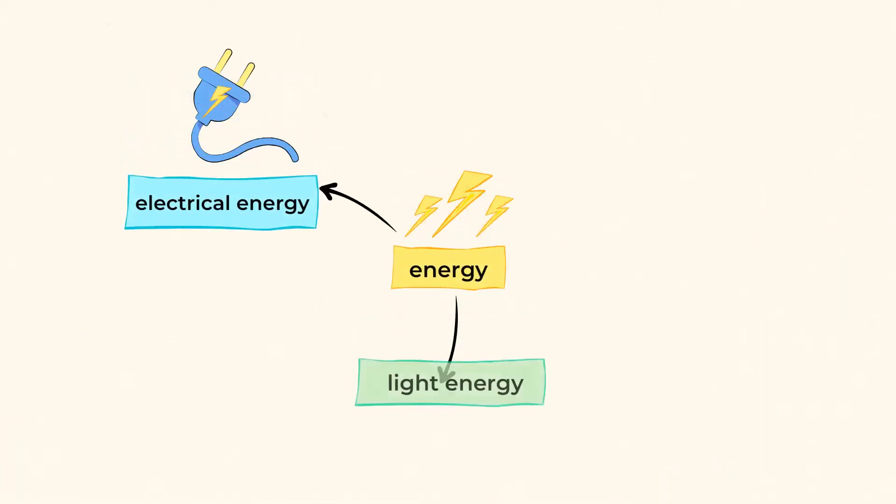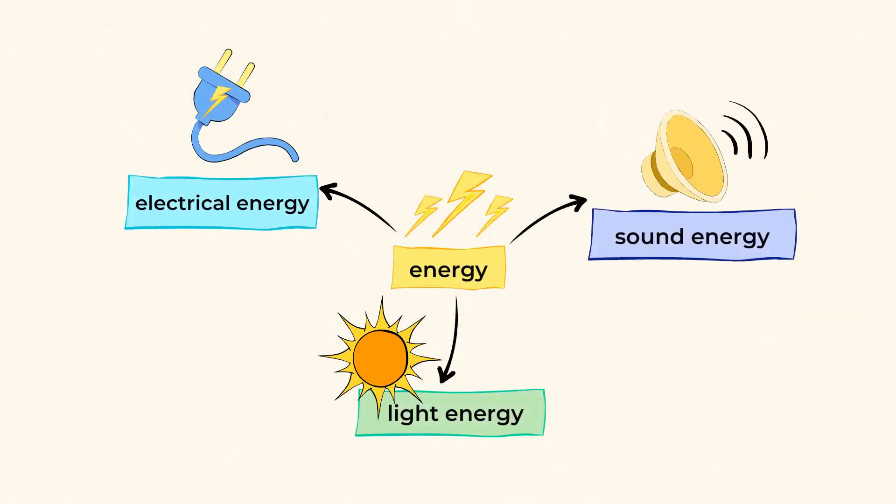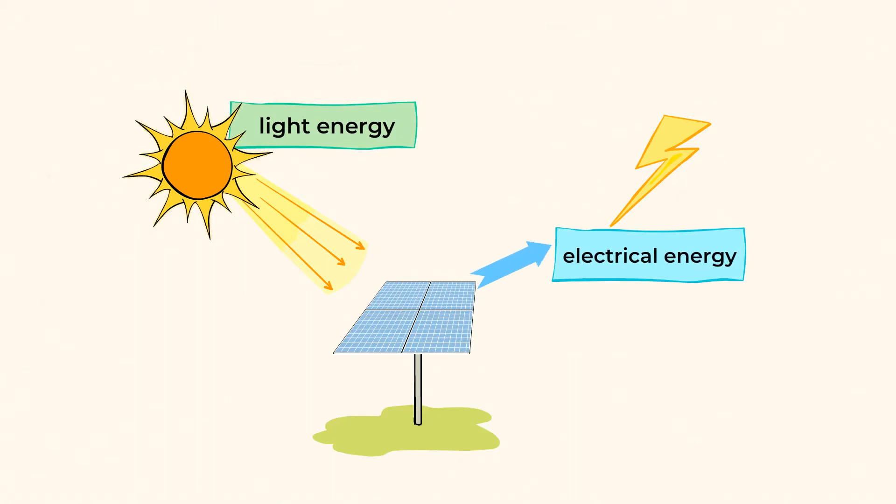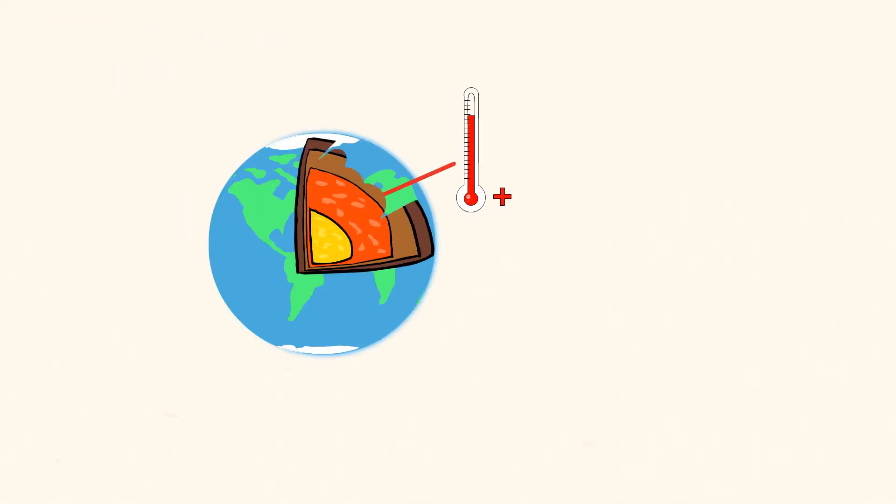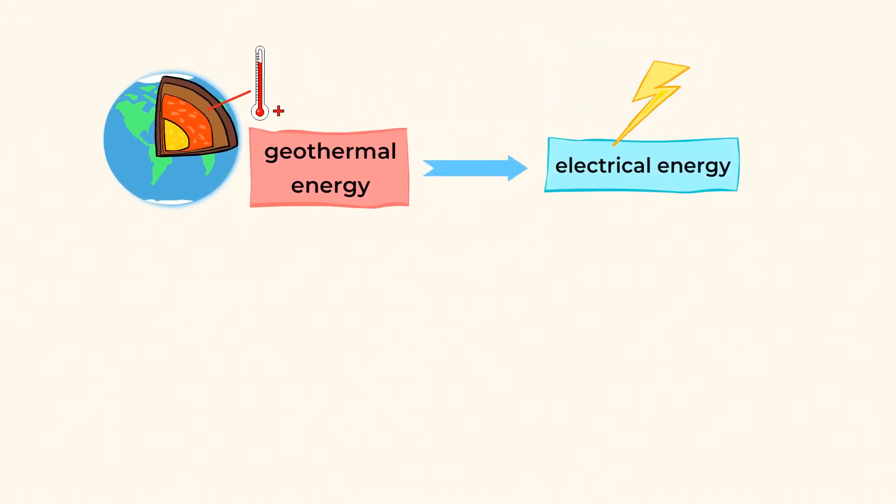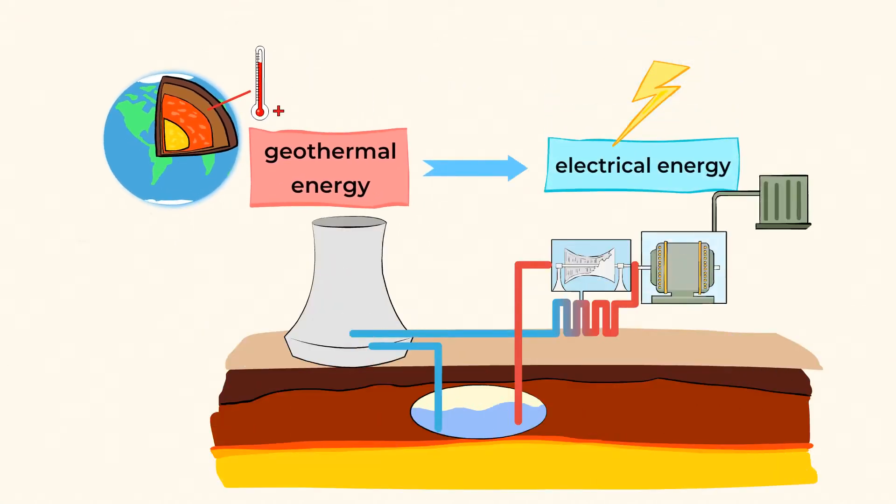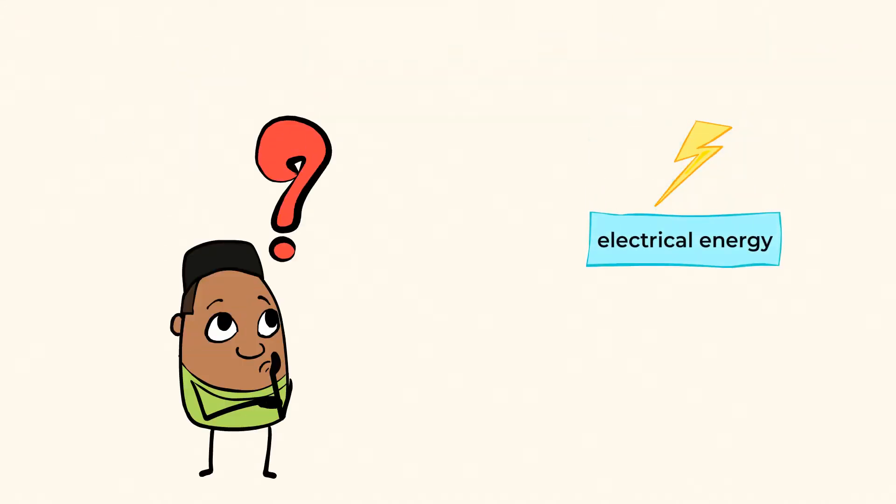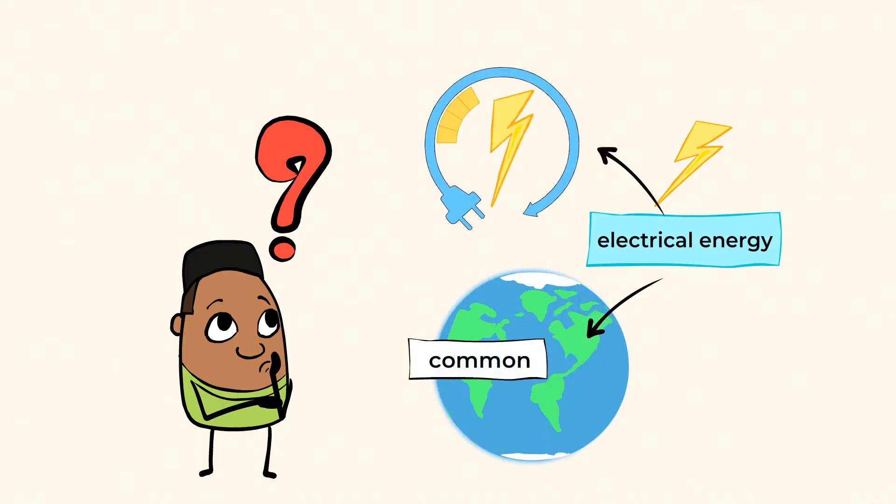There's electrical energy, light energy, sound energy, and even more. One form of energy can be converted into another. For example, light energy from the sun can be converted into electrical energy with the use of solar panels. The heat from the earth, called geothermal energy, can be transformed into electrical energy by the help of special power plants. If you think about it, electrical energy is one of the most common and possibly the most useful forms of energy.